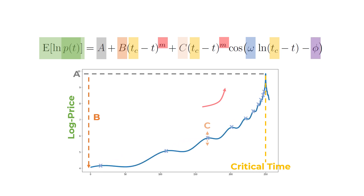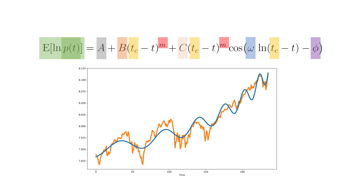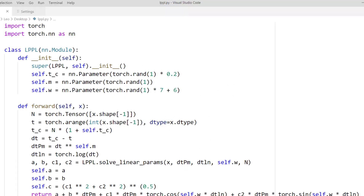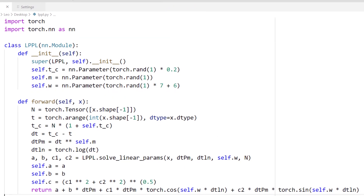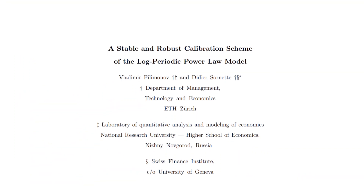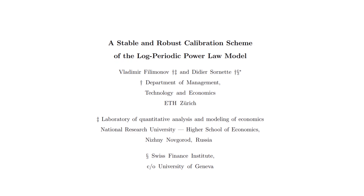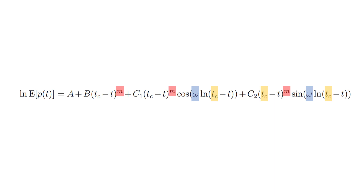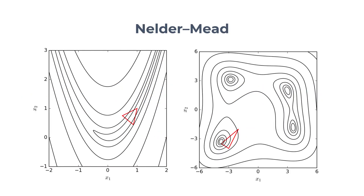So how do we solve for those parameters to get a close fit to our data? It's not trivial. The log-periodic power law function is highly nonlinear, has many local minima, high variance, and is hard to optimize. Although it's a differentiable function, it's very fragile and is not very back-propagation friendly. This paper proposes a relatively robust calibration scheme by reducing the number of nonlinear parameters to 3, where the only nonlinear parameters are m, omega, and the critical time, which can be solved for using local search methods such as the Nelder-Mead simplex method.